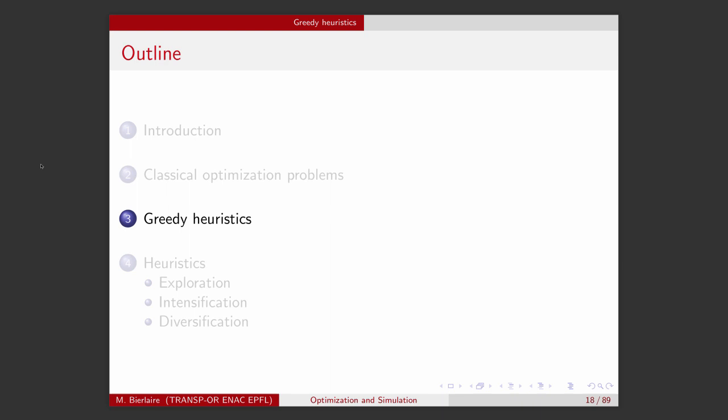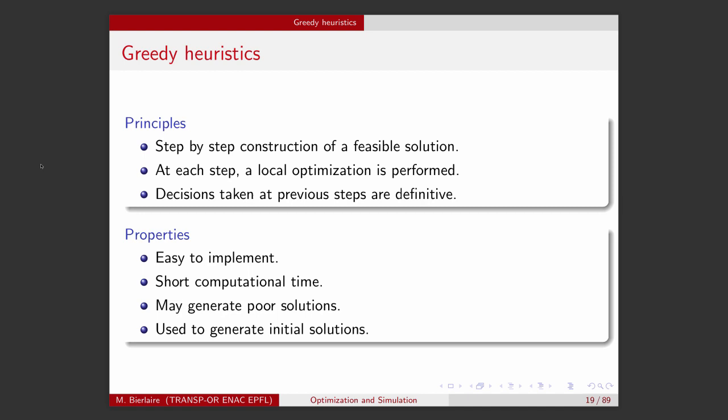The principles guiding the greedy heuristics is that we will construct, step by step, a feasible solution. And at each step, there will be some sort of local optimization happening. The reason why it's called greedy is because the decisions taken at each step of the algorithm are not revised later on. They are definitive.